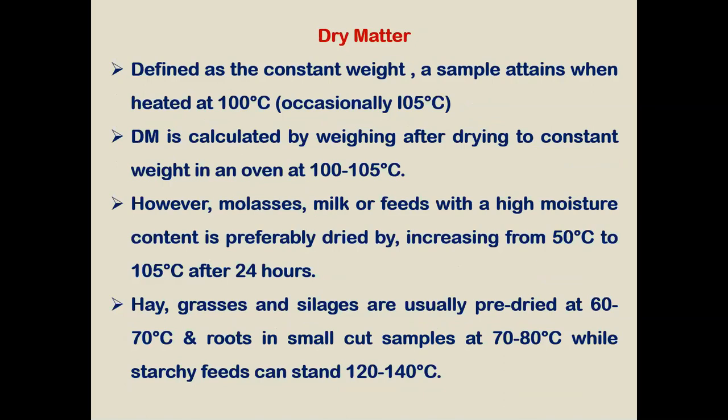Dry matter is defined as the constant weight that a sample attains when heated at 100 degrees centigrade in an air oven; it may vary up to 105 degrees centigrade, so 100 ± 2 degrees centigrade is the standard. Dry matter is calculated by the weight after drying to constant weight in an oven at 105 degrees centigrade.